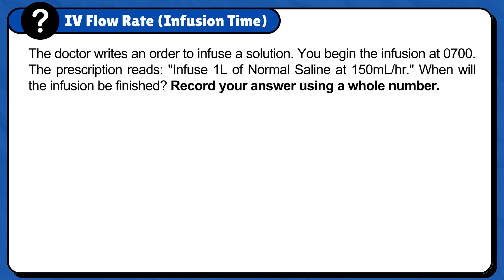This problem is saying that you have 1 liter of normal saline that needs to be infused at 150 ml per hour. So for every hour, 150 ml will be infused, and the total volume is 1 liter. If you start the infusion at 0700, when will it be finished? First, convert liters to ml.